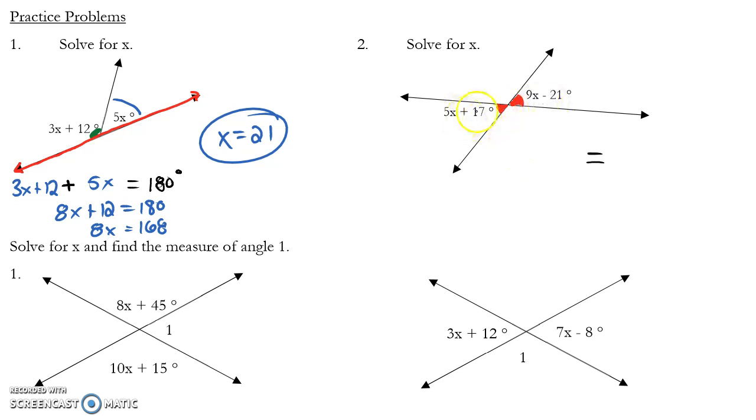In number 2, they're equal to each other, they're vertical angles. 5x plus 17 equals 9x minus 21. That's the geometry. You have to be able to see it and write down this equation. Now it's an algebra problem. Subtract 5x from both sides, add 21 to both sides, we get 4x equals 38. Divide both sides by 4, and you get x equals 9.5. And that's okay, you can get decimals.